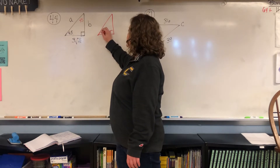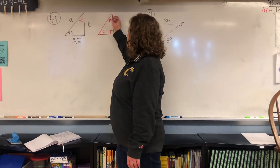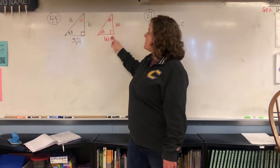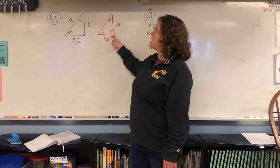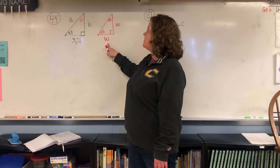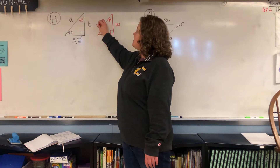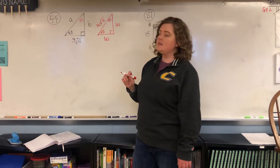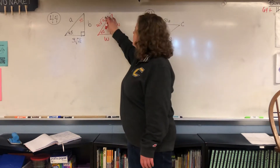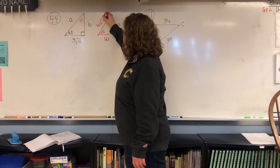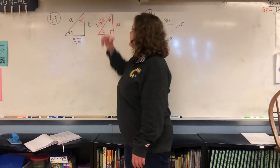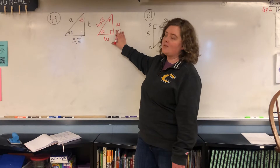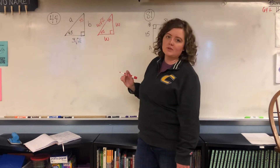So if this is 45 and this is 45, these two pieces are the W. They're the same because it's an isosceles triangle, and then this one is W times the square root of two. So whatever these sides are, they're the same, and then you take that and multiply by square root of two.